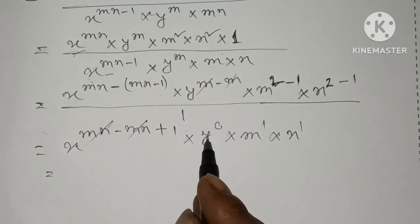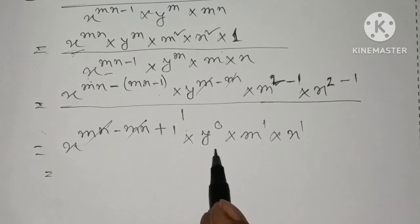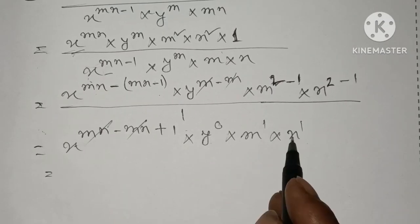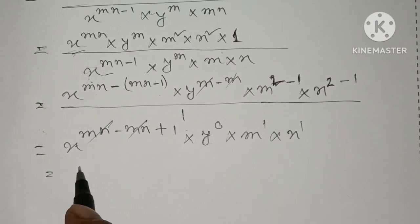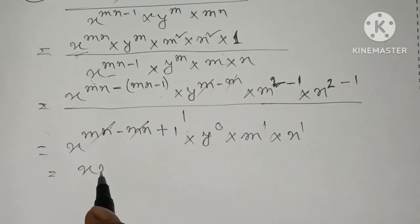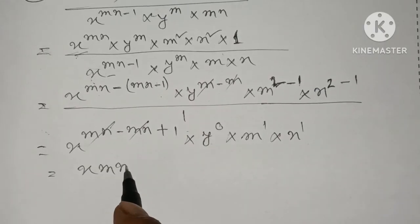That this equation is 1. So, I am going to write X, M, N. What do we do? We are going to write X, M, N.